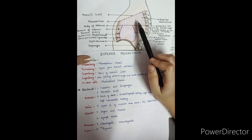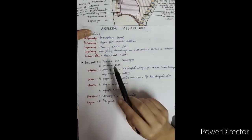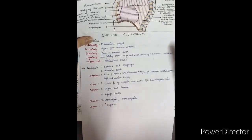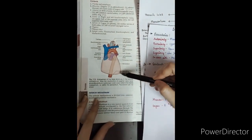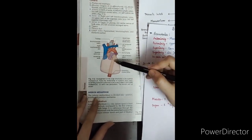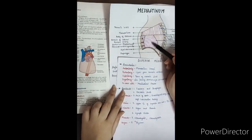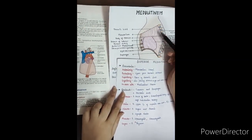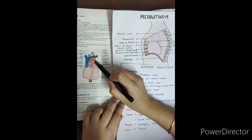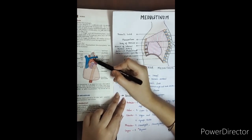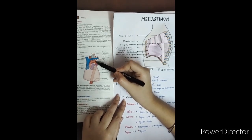If we see the contents of the superior mediastinum: the tubes — trachea, esophagus, and thoracic duct. These are three tube-like contents. If we see the arteries — there is the arch of aorta. And from the arch of aorta, three branches arise: the brachiocephalic artery, the left common carotid artery, and the left subclavian artery.